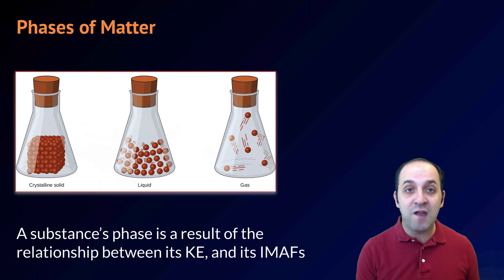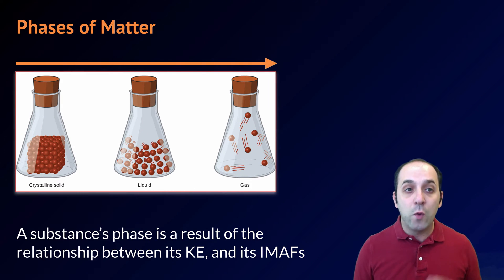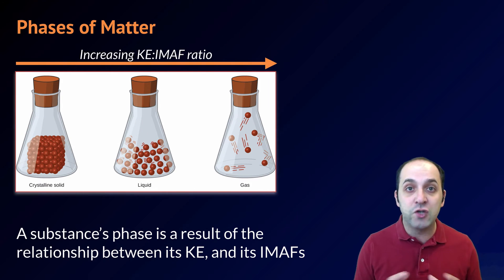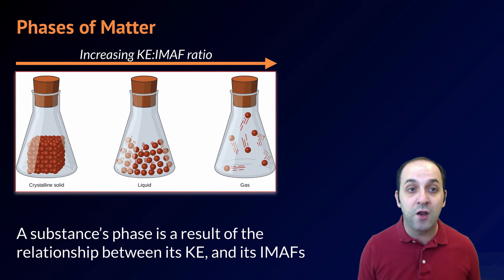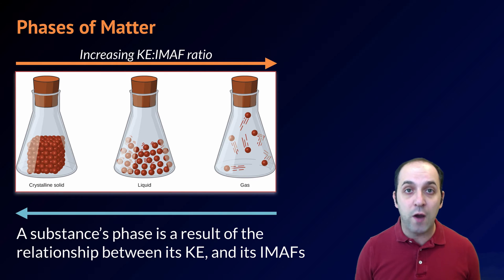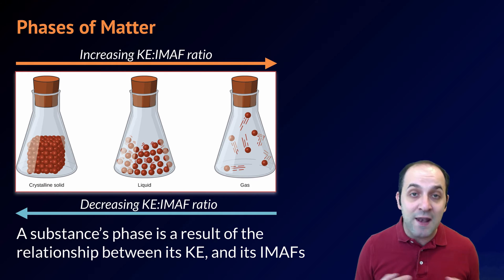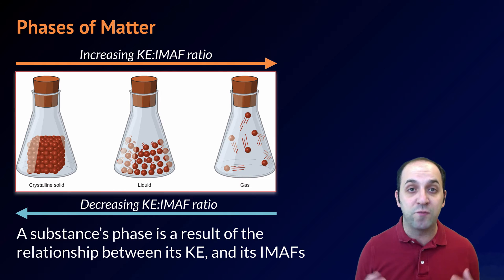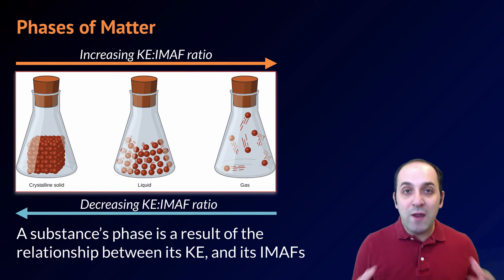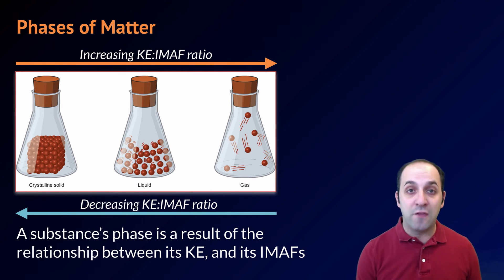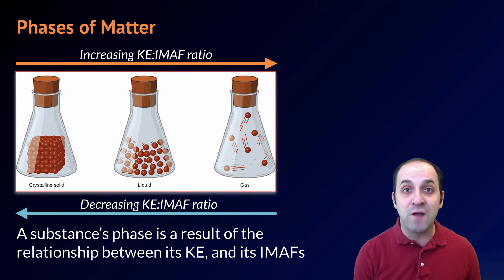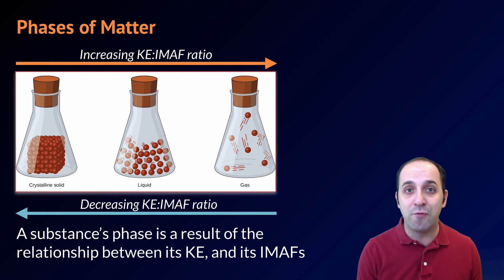When we consider the different phases of matter, we need to understand that the phase a particular substance is in at a particular temperature is due to a balance between the kinetic energy of the particles and the strength of the intermolecular attractive forces. As we go from solid to liquid to gas, the kinetic energy of the particles is increasing with respect to the IMAFs. Going in the other direction, kinetic energy is decreasing with respect to those forces. Now let's look at the three major phases of matter, starting with solids and going up through gases.